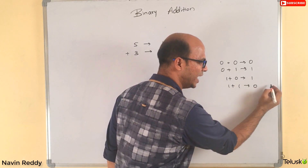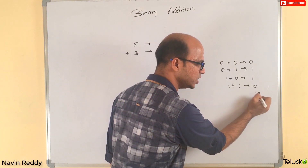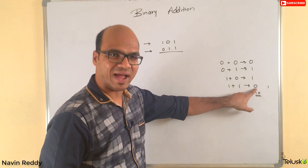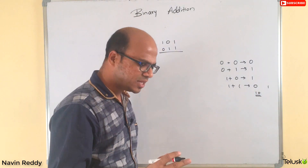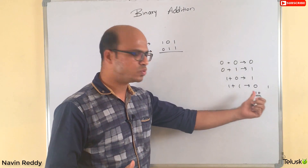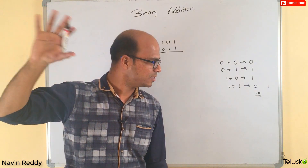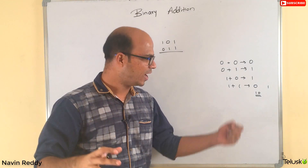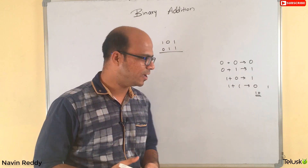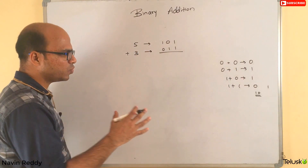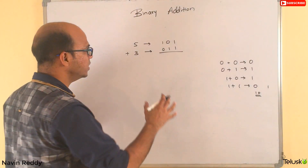One plus one equals zero, and we carry one. So in short, one plus one gives you one zero — where zero is the value and one is the carry. The output is one zero. You can find a video linked in the description or click the card to understand exactly why one plus one equals zero in binary. But the rule is: one plus one gives zero with a carry of one.